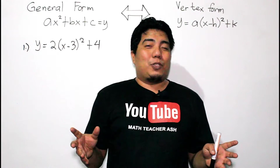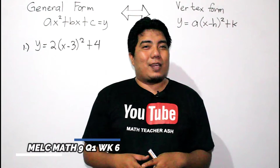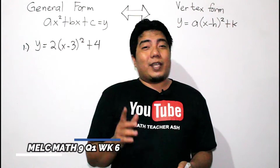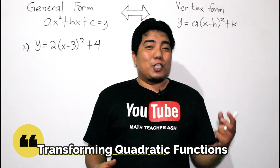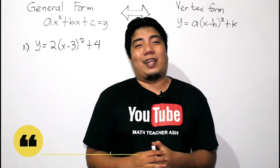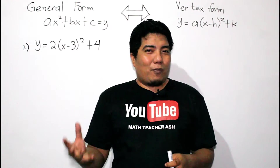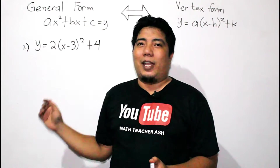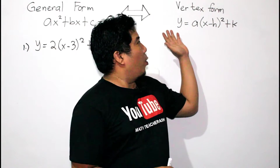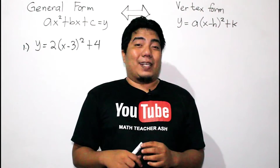Welcome to another session here in Math Learning with Sir Ash. Today, we're going to discuss the most essential learning competency-based lesson for quarter one, week six of grade nine mathematics, which is all about how to transform vertex form to general form, or general form to vertex form of a quadratic function. Remember from our previous discussion: the general form is AX squared plus BX plus C equals Y, while the vertex form is Y equals A times the quantity X minus H squared plus K.